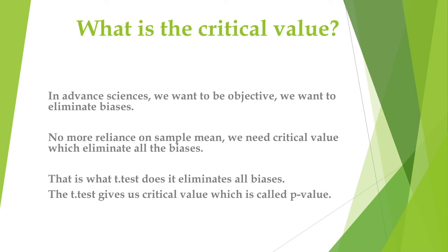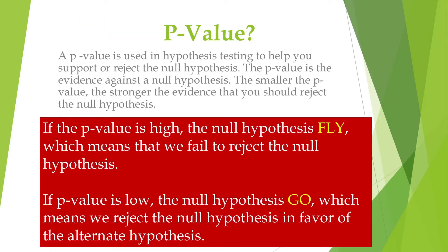What is the critical value? We want to be objective and eliminate biases — no more reliance on the sample mean. We need a critical value which eliminates all the biases, and that is what the t-test does. The t-test gives us a critical value which is called the p-value. A p-value is used in hypothesis testing to help you support or reject the null hypothesis. The p-value is the evidence against the null hypothesis. The smaller the p-value, the stronger the evidence that you should reject the null hypothesis.